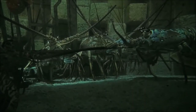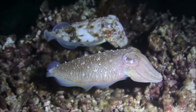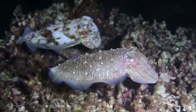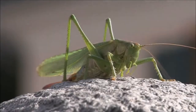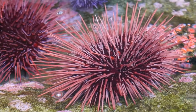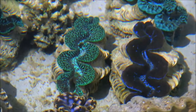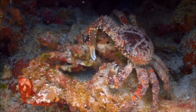Most of the animals in the world are invertebrates. Some examples of invertebrates are octopus and squid, insects, arachnids, starfish and sea urchins, jellyfish, crabs and lobsters, clams, and many more creatures.